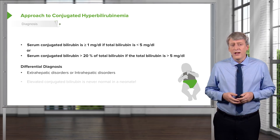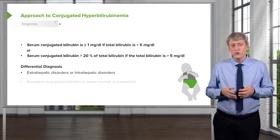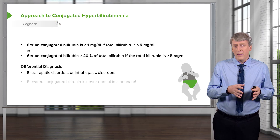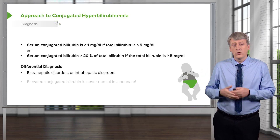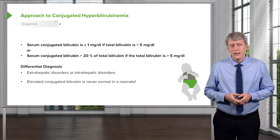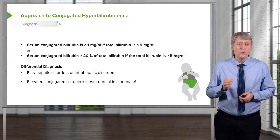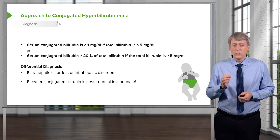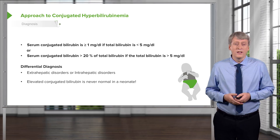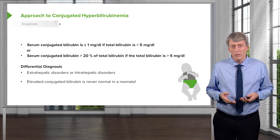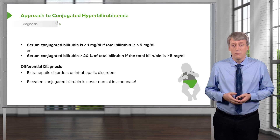The differential diagnosis for a child with conjugated hyperbilirubinemia is generally either an extrahepatic problem where the bile can't get out, or an intrahepatic problem. Elevated conjugated bilirubin is never normal in a neonate — that's an incredibly important fact. Unconjugated or indirect hyperbilirubinemia is very common, but when it's conjugated, there is definitely a problem.